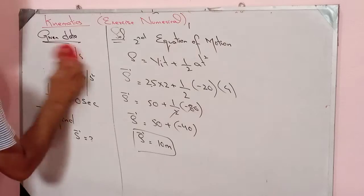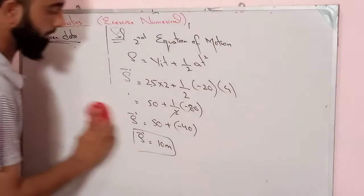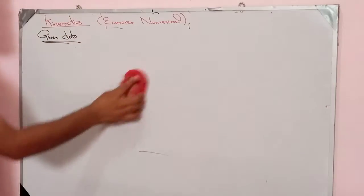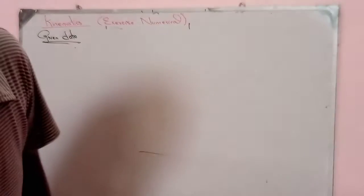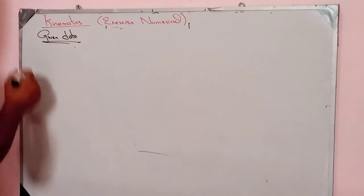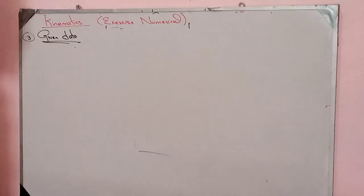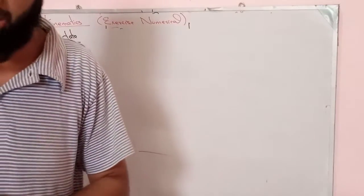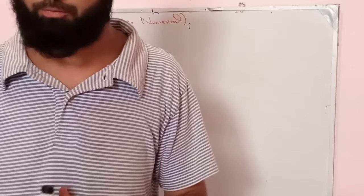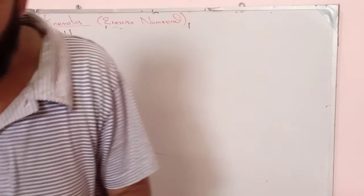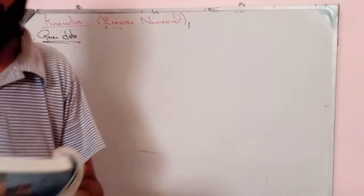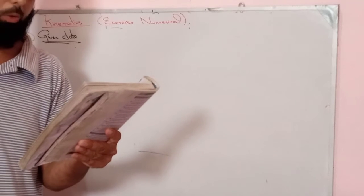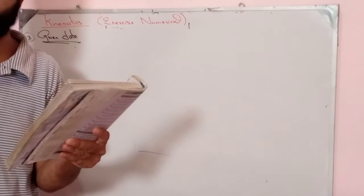S is equal to 10 meters. The displacement is 10 meters. This is the third numerical exercise. Third numerical statement: A bullet accelerates the length of the barrel of a gun, which is 0.750 meters long.